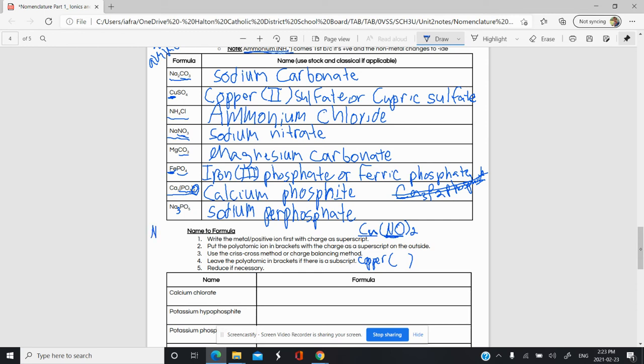This is going to be copper something. Be careful here. This is NO. It's not NO2. It's NO in brackets. Remember, if you have NO3, that's nitrate. If you have NO2 minus, that's nitrite. If you have NO minus, that's hyponitrite. So this is copper something hyponitrite.